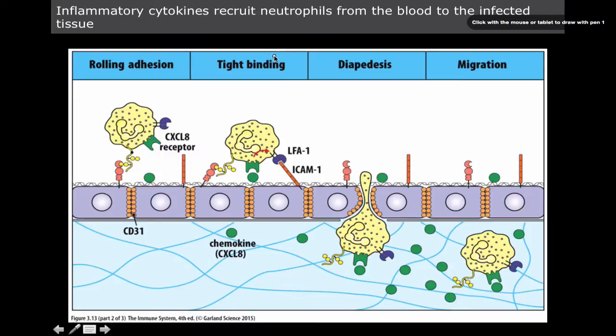This diagram here at the top is the entire long process known as extravasation. It consists of rolling adhesion, tight binding, diapedesis, and migration.